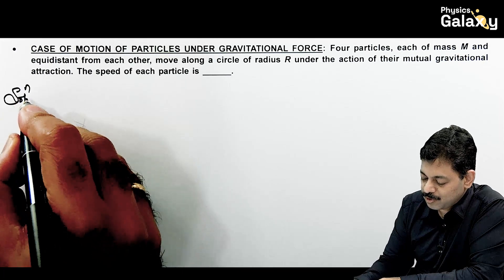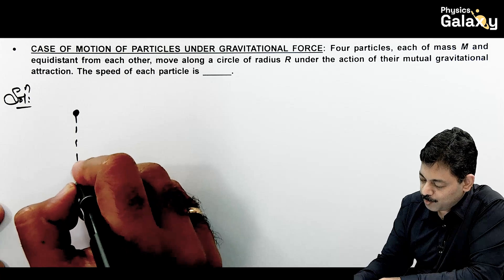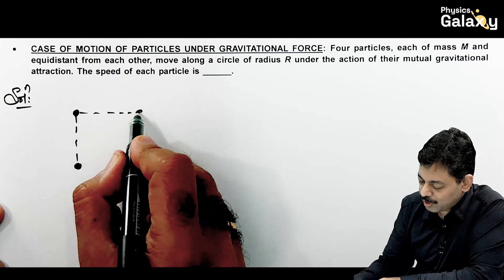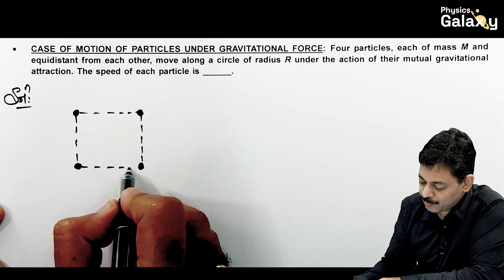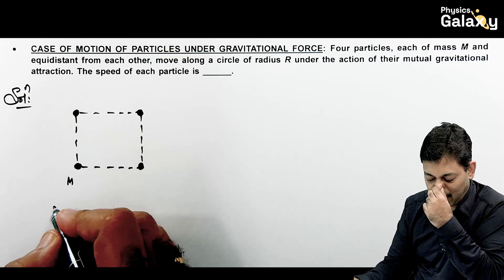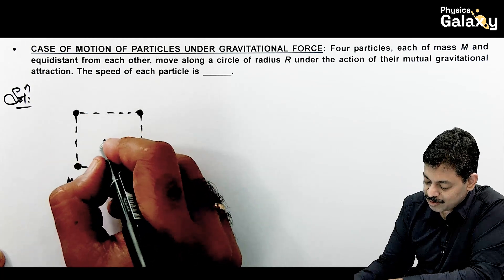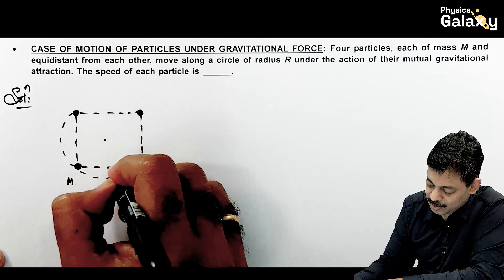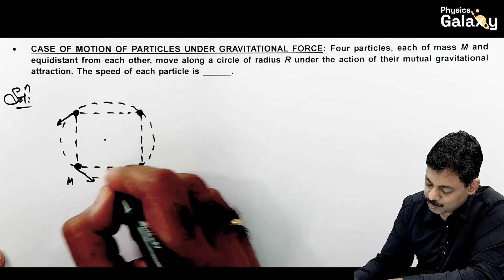So here the case is four particles each of mass m are equidistant from each other and they move along a circle of radius R under the action of their mutual gravitational attraction. We need to check the speed of particle. So the very first thing you should understand is how the particles are moving. There are four particles each of mass m and they are equidistant from each other. That means they are located at the vertices of a square each of mass m.